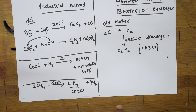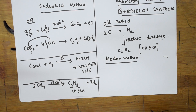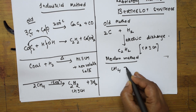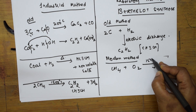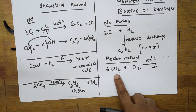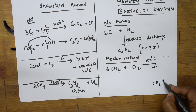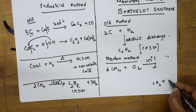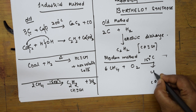Now the modern lab method of preparation of acetylene also uses methane. Here, methane is allowed to combust at a controlled temperature of 1500 degrees centigrade. Six moles of methane are taken. Normally when methane combusts in the presence of oxygen, we get carbon dioxide and water. But here, by controlling the temperature, you get carbon dioxide plus hydrogen, and you also get acetylene as a product.